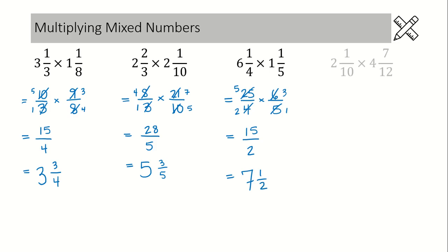Let's practice one more. 2 and 1 tenth times 4 and 7 over 12. So again, we have these mixed numbers that we need to convert to improper fractions. Just a reminder, these denominators will never change, and so it's a good idea to put those in first, and then come back and just figure out your numerators by multiplying, adding. In this case, we'll have 21.